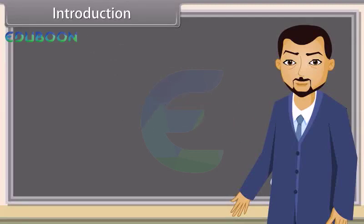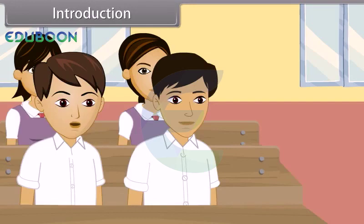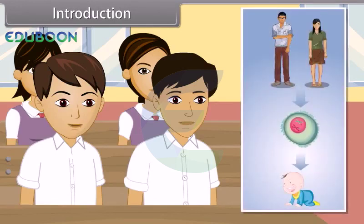What are genes? A gene is a unit of heredity that is transferred from parents to offspring to transfer information for the expression of certain characteristics.